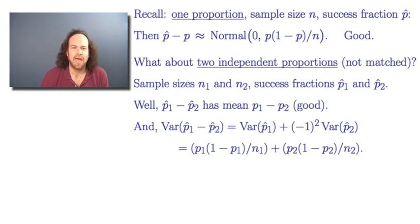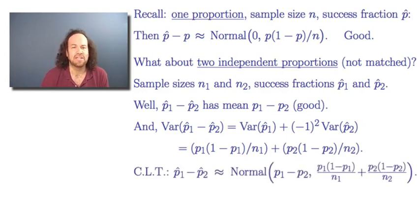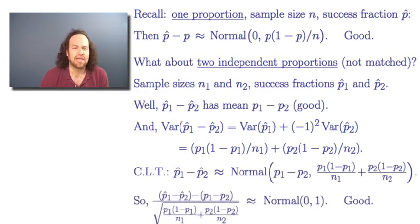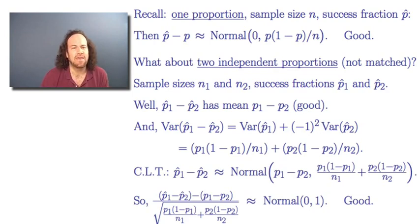If the two samples are reasonably large, the central limit theorem approximately applies, and p1-hat minus p2-hat approximately follows a normal distribution with mean p1 minus p2 and variance equal to the sum of the two variance components. We can subtract off the mean and divide by the square root of the variance to get a standardized fraction that approximately follows a standard normal distribution. This allows us to think about confidence intervals and hypothesis tests.